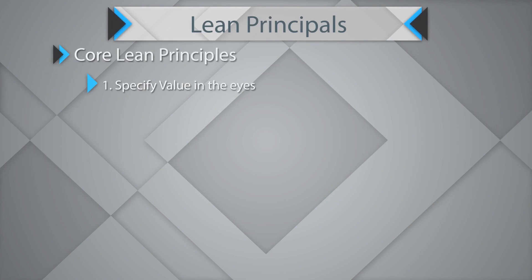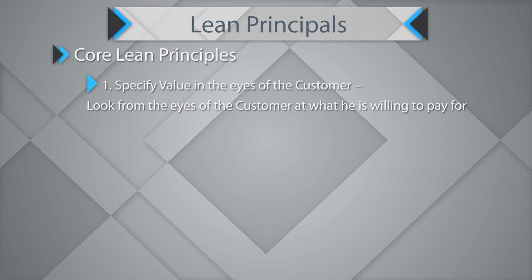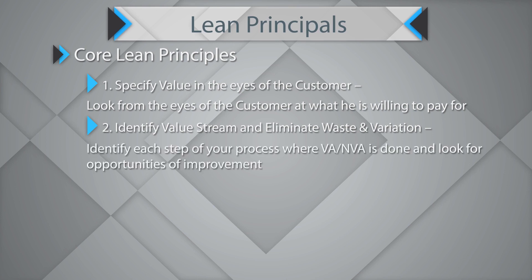The first core Lean principle is to specify value in the eyes of the customer. You should look from the eye of the customer at what is value according to him. Whatever the customer is willing to pay for is value. Whatever contributes to first time right for my customer is value. Everything else is non-value adding. You must first understand the term value before you lean a process. The second step is to identify the value stream and eliminate waste and variation — identify each step of the process, even the transactional ones, and determine which steps are value adding and which are not.